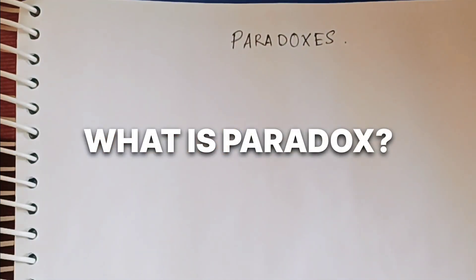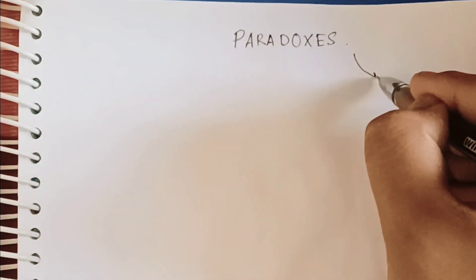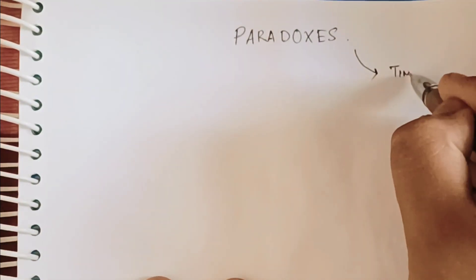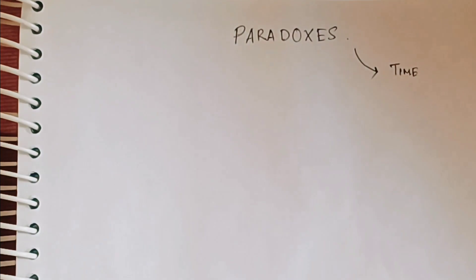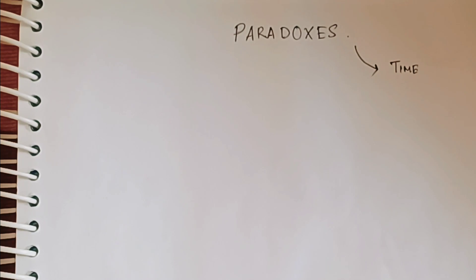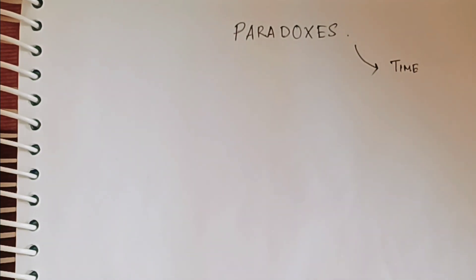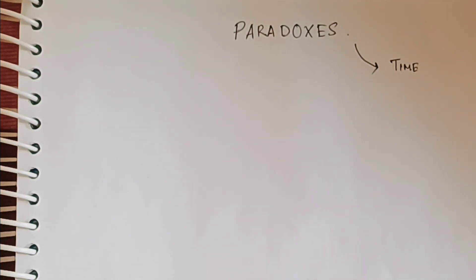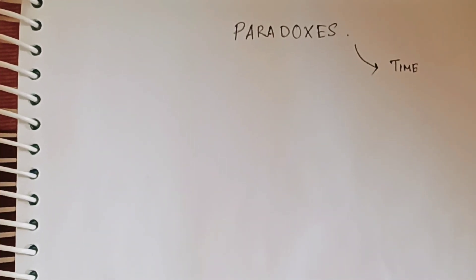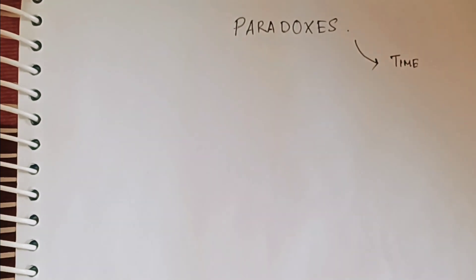Right here, what paradoxes mean — I will be explaining everything, but mostly my topic will be around the time paradox. Time is a part of this paradox. So what does paradox actually mean? It's really tricky, like a riddle or puzzle. It's something that when you think more about it, you get more confused.